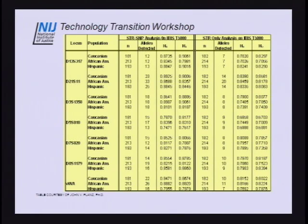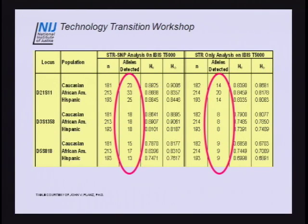Looking at some of the data — these graphs are big and the numbers are little. We're comparing our top STR markers across our three population groups. Here's data incorporating the SNPs with the STRs, and here's with the SNPs basically stripped from the analysis. These data with SNPs stripped are exactly what you would find if you were typing it on a CE platform today. But there are some major steps being taken — we're going from 14 alleles to 23 alleles, from eight alleles to 18 alleles. To get better power of discrimination, we have to increase the total number of alleles.